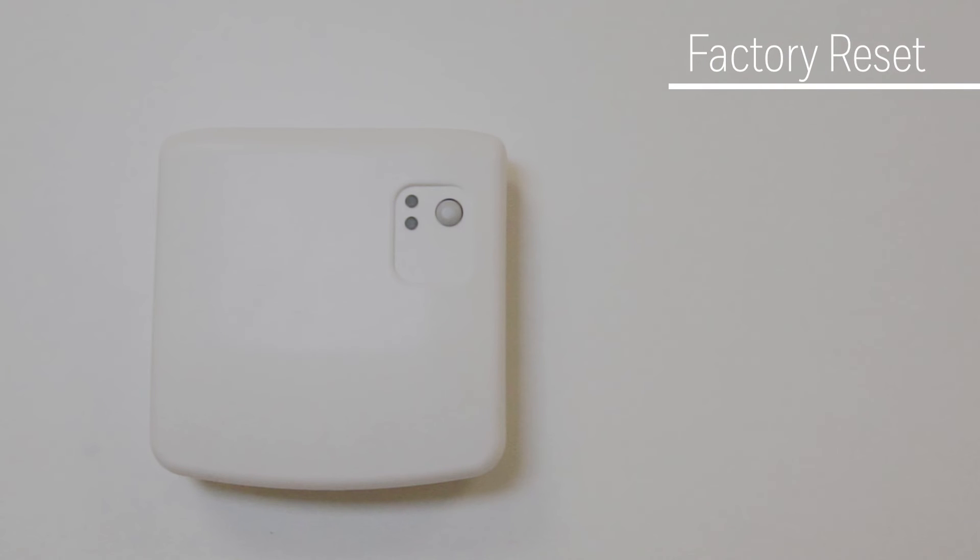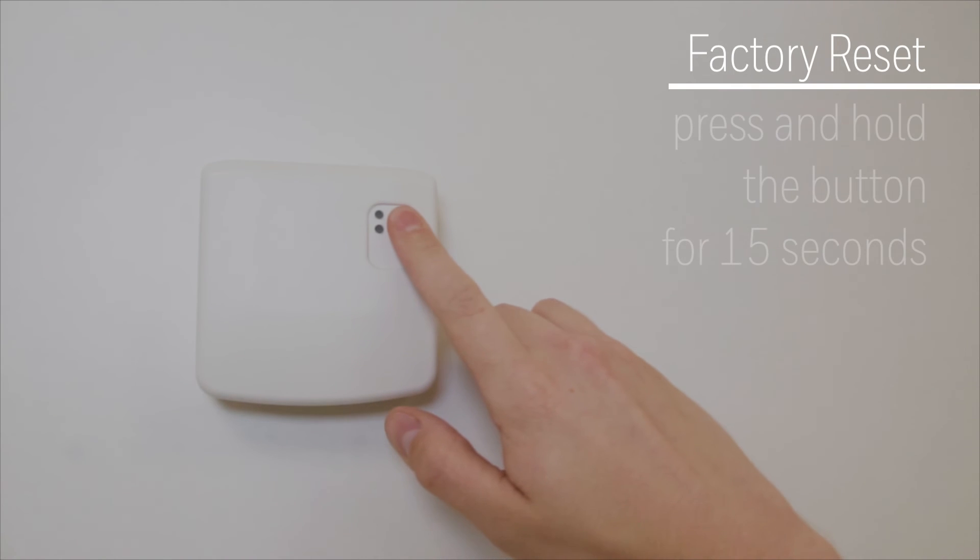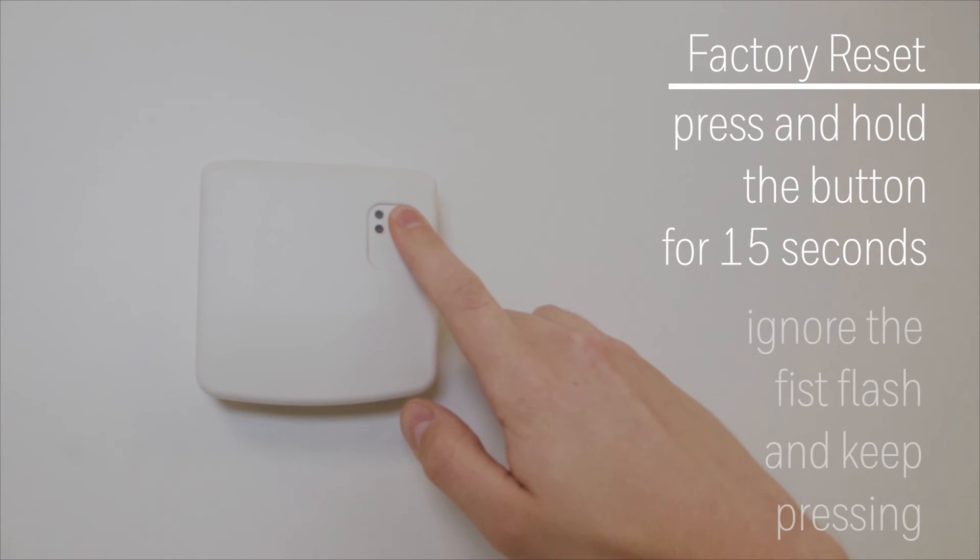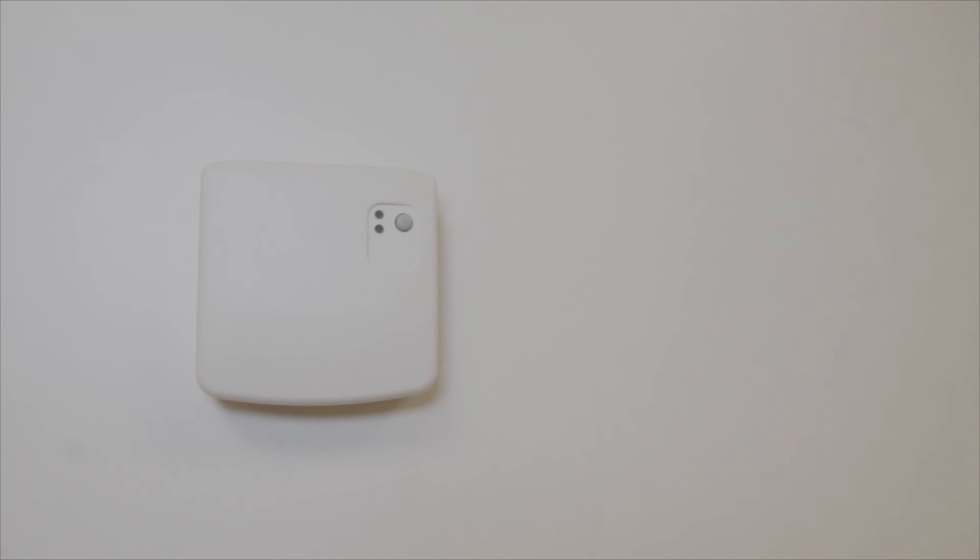The factory reset will return the unit to the conditions at first power on and delete all the bindings. This is initiated by pressing and holding the button for 15 seconds. After 5 seconds, you will notice the red flash, which indicates binding mode, but you have to ignore it and keep pressing until it blinks faster at 0.1 seconds on and 0.9 seconds off to perform the reset.